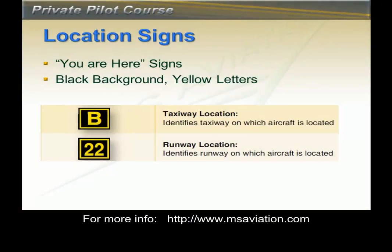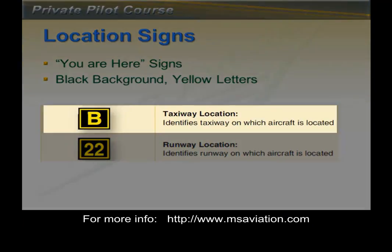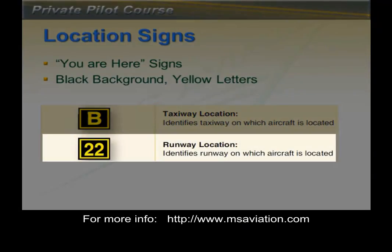Location signs are black with yellow letters. These are the 'you are here' signs. The top sign shows that you are located on taxiway Bravo, and the second sign shows that you are on runway 22.